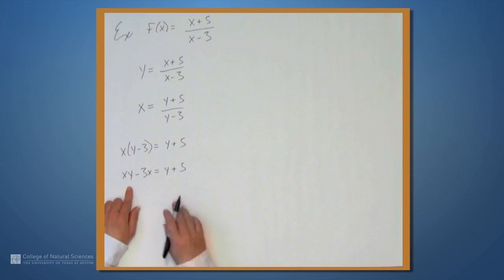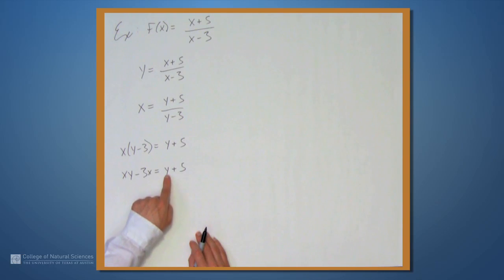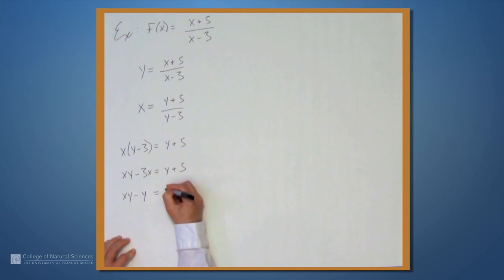Now we want to get all the terms with y's in them over to one side. All the terms without y's in them over to the other side. We have an xy over here. Let's move this y to the left, and we'll move this minus 3x to the right. So, we get xy minus y equals 3x plus 5.